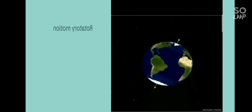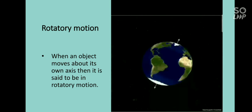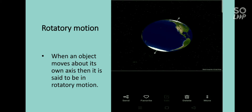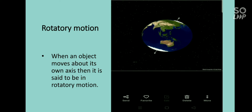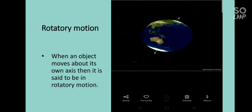Next is rotatory motion. When an object moves about its own axis, it is said to be in rotatory motion. Look at this video — the earth is rotating about its own axis, so the earth is in rotatory motion. Another example is spinning a top: it stands in one place but keeps rotating, so that is rotatory motion.